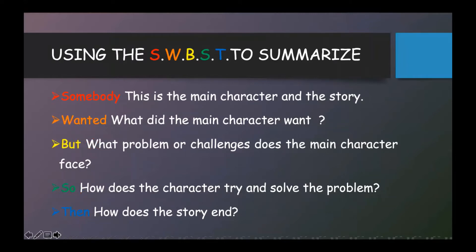Now, I'm going to teach you a strategy that will make summarizing a piece of cake. This is called the Somebody Wanted But So Then strategy, or SWBST for short. This strategy will help you find and focus on the most important elements of the story. A summary should include the main elements of the story, which are the characters, the setting, the problem, and the solution.